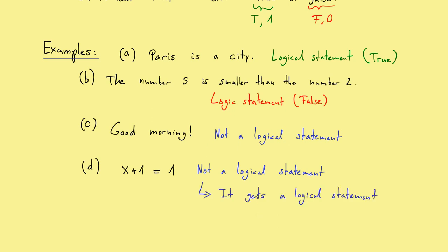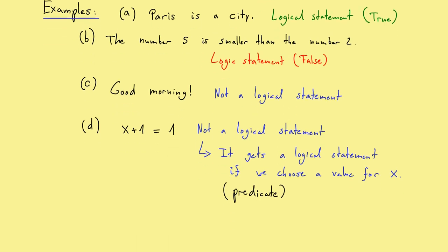Hence it gets a logical statement if we choose a value for the variable x here. This is an example of what we will call later a predicate. Another example of such a predicate would be today is Tuesday. Again, seems like a very nice sentence, but it's not a logical statement, since today depends on the day I will say the sentence. Therefore it may be true or false, so it has no well-defined truth value. Again, it's a predicate. Now today is our x. Hence I can say the same as before. Predicates will be very important later, but now we will focus only on logical statements.